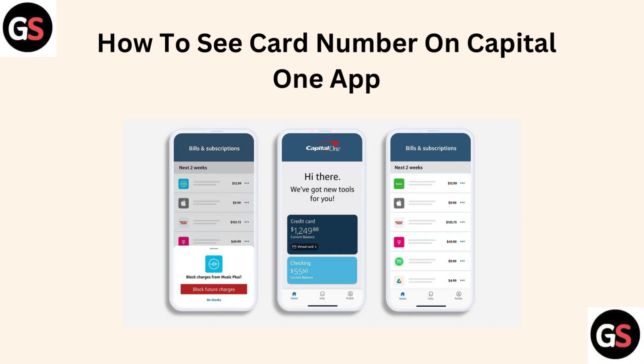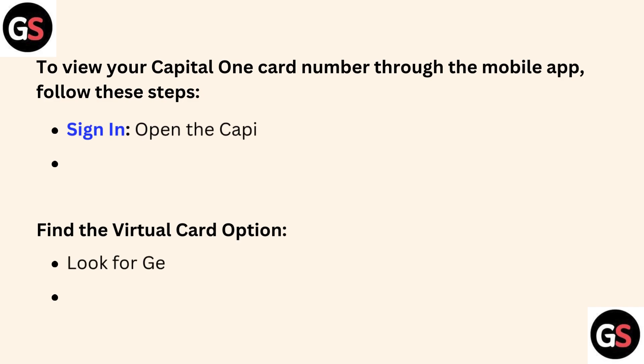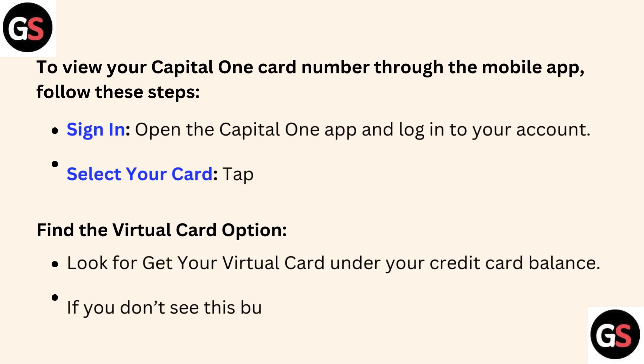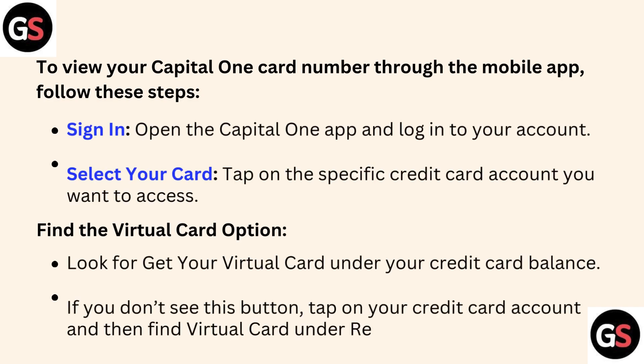Hello friends, today I am talking about how to see your card number on the Capital One app. To view your Capital One card number through the mobile app, follow these steps. First, sign in: open the Capital One app and login to your account. Second, select your card: tap on the specific credit card account you want to access.